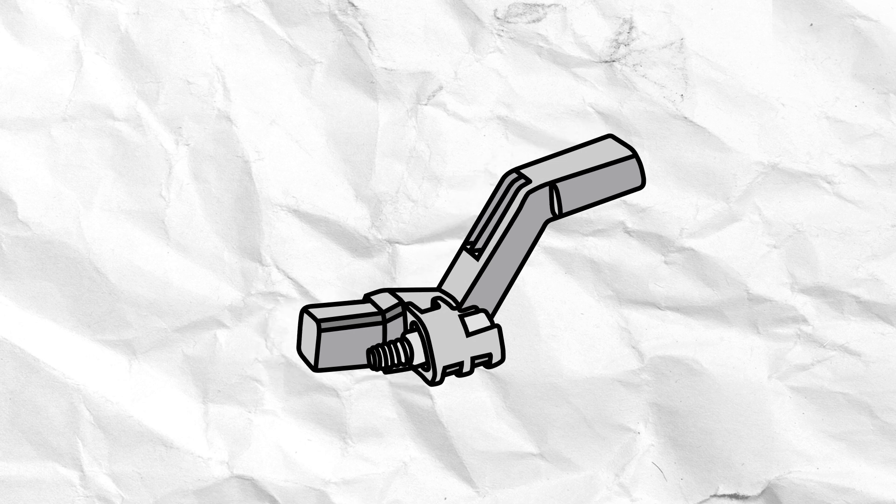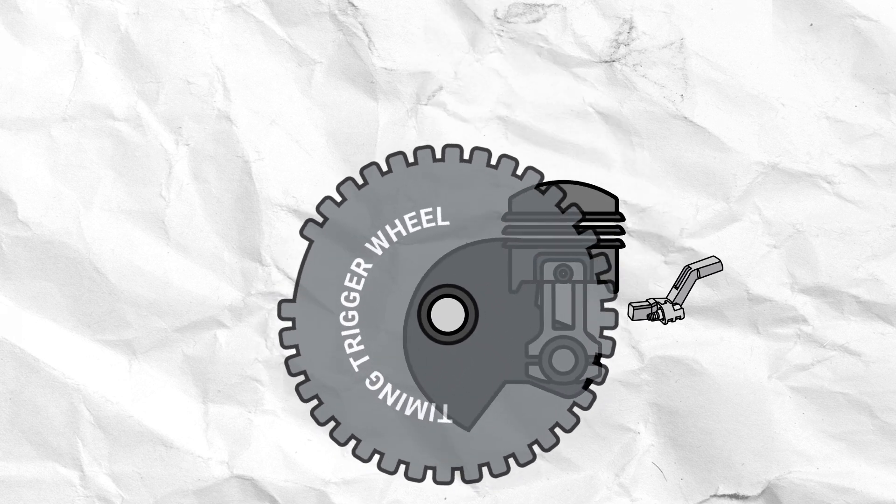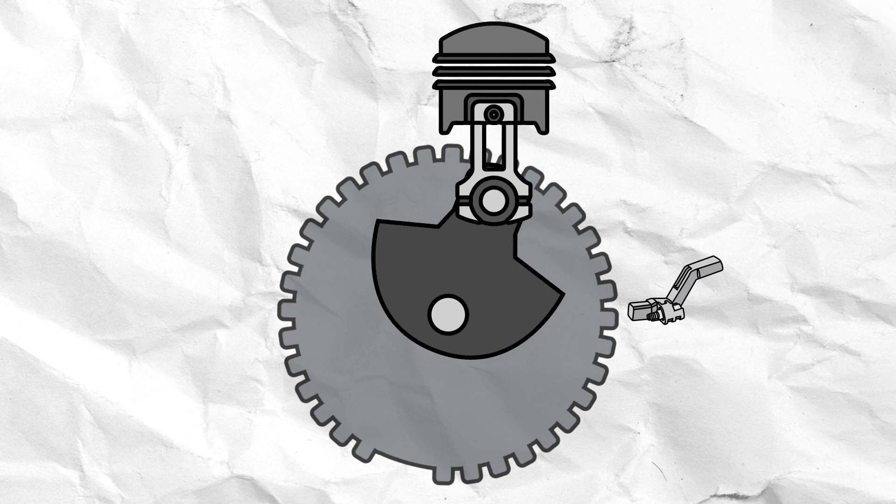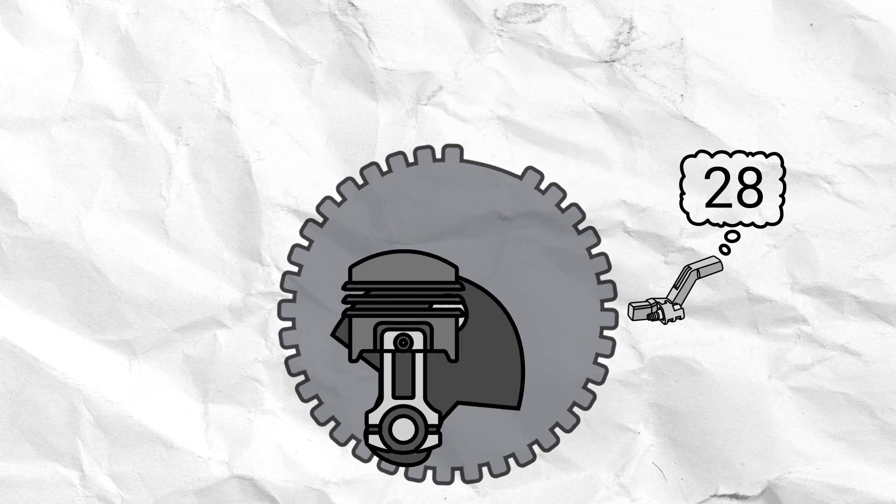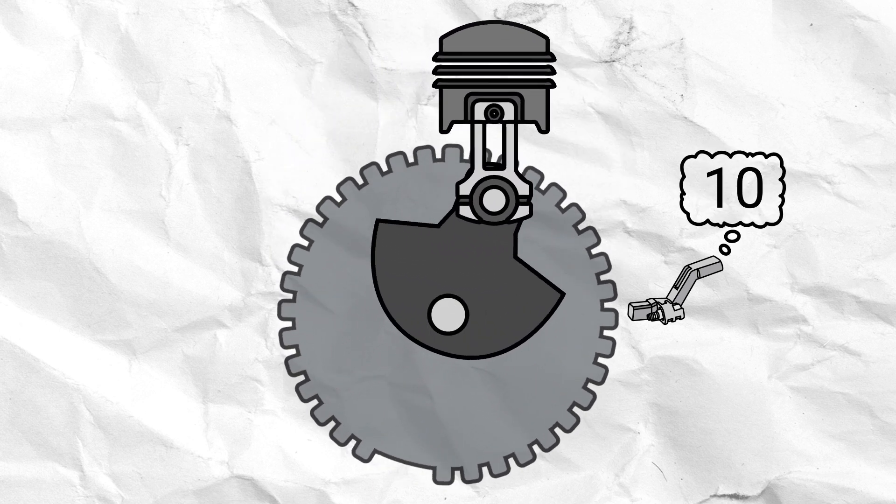The sensor sits in close proximity to the timing trigger wheel, which is attached to the crankshaft, and it counts the number of teeth attached to the wheel to determine the exact position of the crankshaft during its rotation.